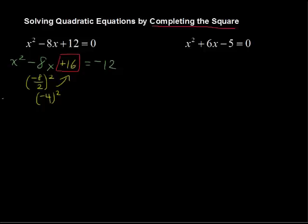So let me just rewrite that so we're clear on that. I've got x squared minus 8x plus 16 equals negative 12. Whatever I add to one side, I've got to add to the other side. So, equals negative 12 plus 16.